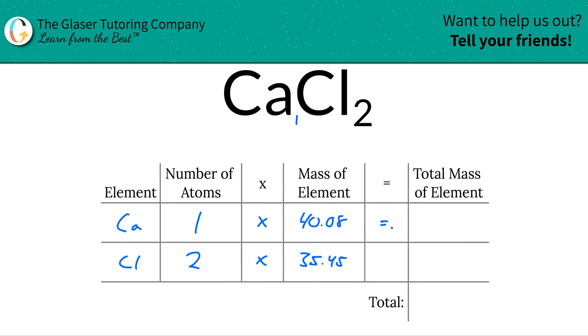And then to find the total mass of each element in the compound, we're simply going to multiply this row on across, right?